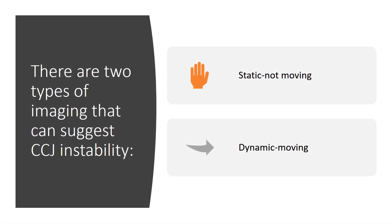There are two types of imaging that can suggest CCJ instability. One is static non-moving imaging, and the other is dynamic. We're going to be focused on the static version of MRI. There is a moving MRI, or one that can be done with motion, but today we'll focus on the static MRI.